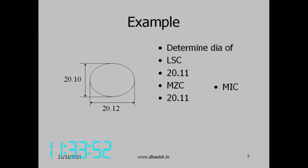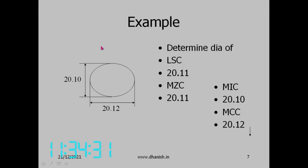The maximum inscribed circle is the biggest circle that can be inscribed in these points. The diameter is 20.1 — if it exceeds 20.1 it will go beyond one side. So the maximum inscribed circle diameter is 20.1. The minimum circumscribing circle is the circle which will enclose all the points, passing through the outer two points, so that will also be 20.12. This is for the simple case where the actual surface is elliptical.